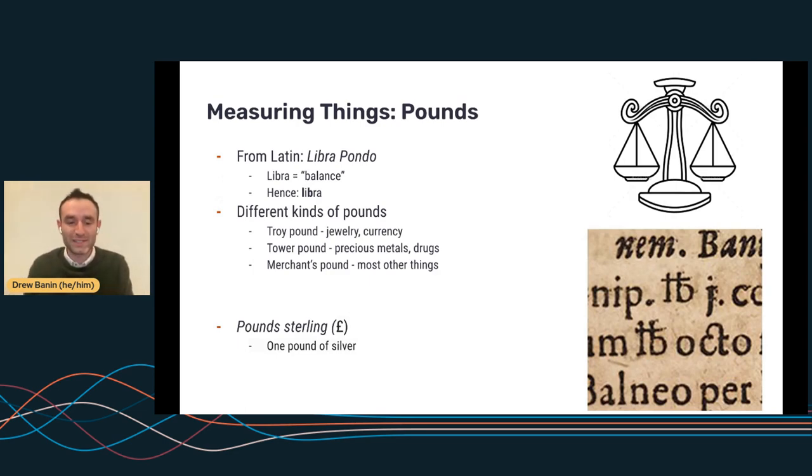So we'll shift gears from measuring distances to measuring weight or mass. It's the pound. This comes from the Latin Libra pondo. And Libra, the astrologists among us know that this is balance. So the Libra zodiac symbol is scales. Balance.